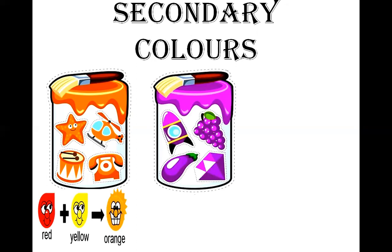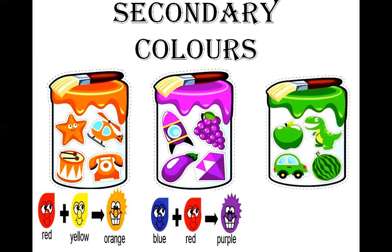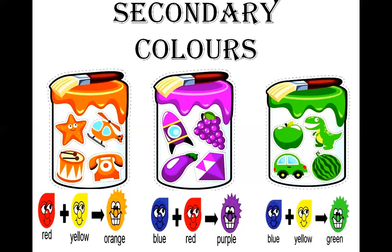Purple — when we mix two primary colors like blue and red, we get purple. And for green color, by mixing blue and yellow we get green. So those are the secondary colors.